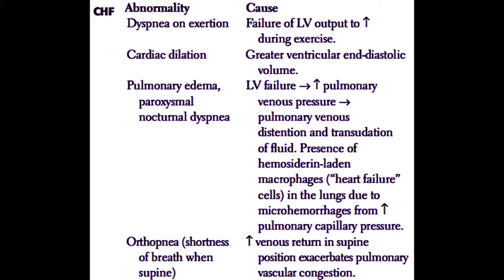These patients will also develop pulmonary edema and paroxysmal nocturnal dyspnea. Pulmonary edema is due to left ventricular failure causing an increased pulmonary venous pressure, which leads to venous distension and transudation of fluid into the air space. The presence of hemosiderin-laden macrophages, also known as heart failure cells in the lung, are due to microhemorrhages from increased pulmonary capillary pressure. Basically, fluid accumulates in the air space of the lung, and these patients can cough up small amounts of blood, such as pink frothy sputum. Patients will also develop orthopnea, which is shortness of breath when lying flat, because of increased venous return in the supine position, which exacerbates the pulmonary vascular congestion.